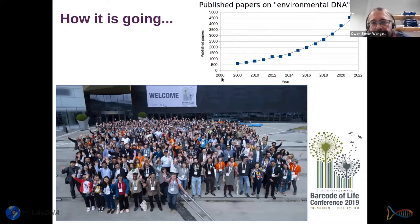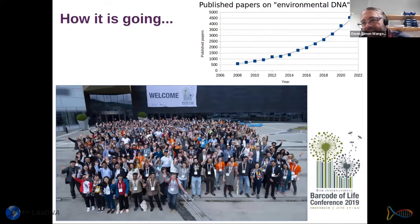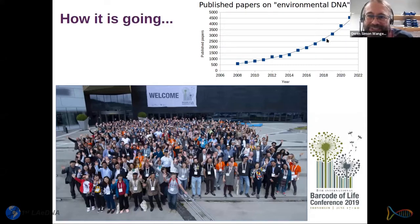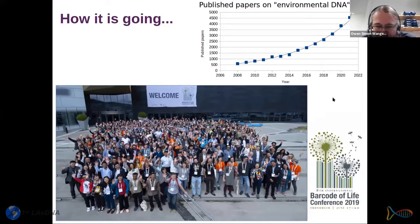This idea escalated quickly. Currently the number of published papers every year using the words 'environmental DNA' on Google Scholar is almost reaching 5,000 papers per year — that's more than 12 papers daily. We've passed the point where a researcher can be completely updated by reading everything published on environmental DNA — actually we passed that point several years ago.